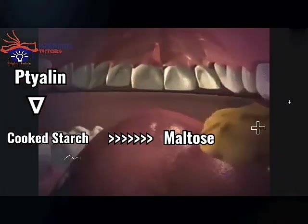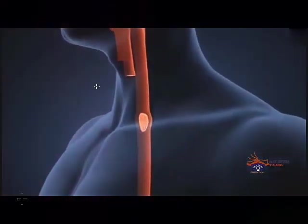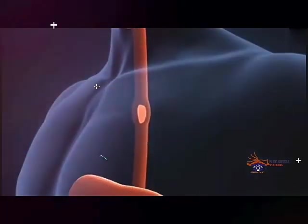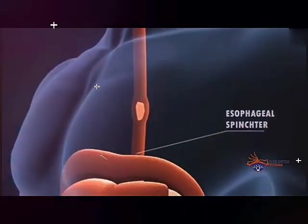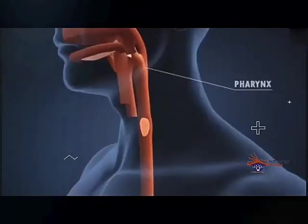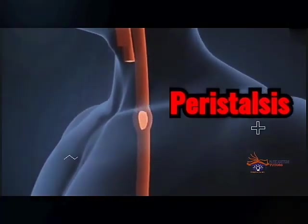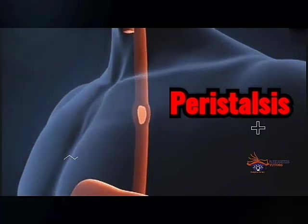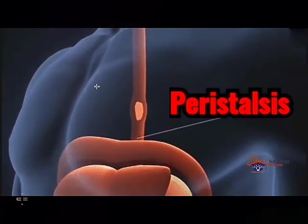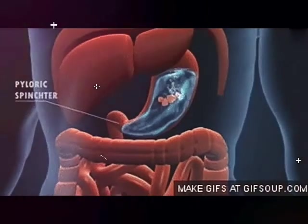The food is then swallowed into the esophagus and goes down through the esophagus wall into the stomach. Even though digestion does not take place in the esophagus, it performs an important function: by forceful contraction and relaxation, the food is passed down through a process called peristalsis. The reverse of this takes place when we vomit — a process called anti-peristalsis.